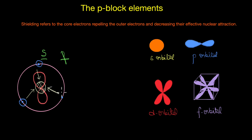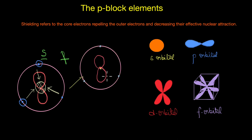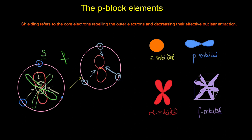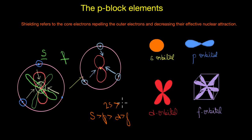The p orbital cannot effectively shield valence electrons from the nucleus as much as the s orbital. The d and f orbitals are even more diffuse, so they do an even poorer job of shielding outer electrons from the nucleus. This gives us the correct order of shielding effect: s > p > d > f. Also, 2s orbitals shield better than 3s, which shield better than 4s orbitals.